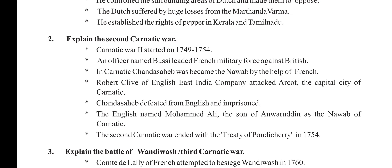Explain the Second Carnatic War. The Second Carnatic War started from 1749 to 1754. An officer named Bussy led the French military force against the British in Karnatic. Chanda Sahib became the Nawab with the help of the French. Robert Clive of the English East India Company attacked Arcot, the capital city of Karnatic. Chanda Sahib was defeated by the English and imprisoned. The English named Mohamed Ali, the son of Anwaruddin, as the Nawab of Karnatic. The Second Carnatic War ended with the Treaty of Pondicherry in 1754.